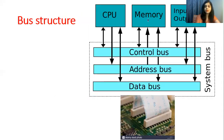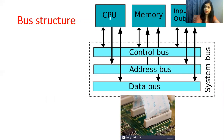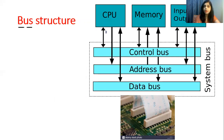In a microcomputer or any processor system, you need a central processing unit, memory, and input/output devices. These three components are connected together via buses.